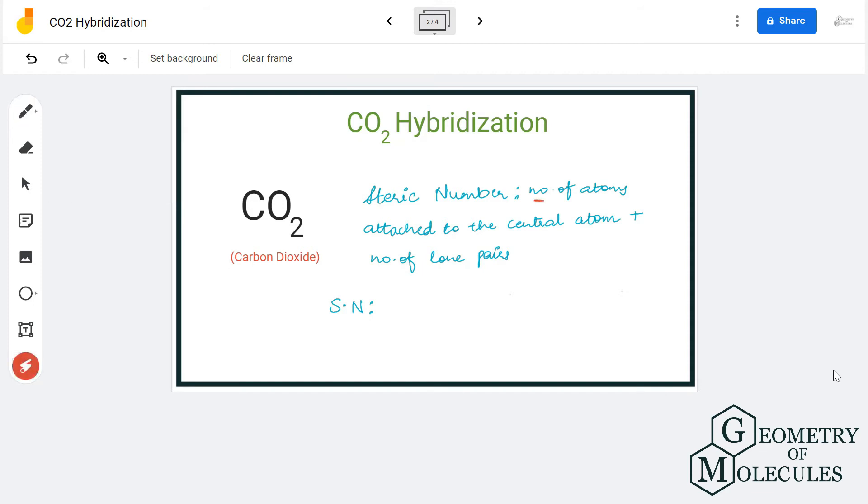Here in carbon atom, there are no lone pairs because it uses all its valence electrons to form bonds, and it is bonded to two oxygen atoms. So the steric number for carbon will be two.